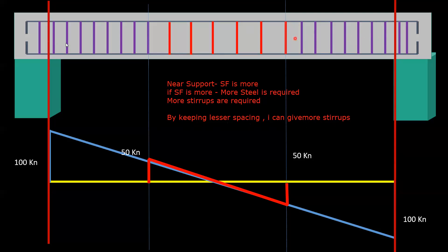That is why practically, when we were understanding center-to-center distance for stirrups near the support, we were keeping 100 mm, 100 mm, 100, 100 and so on. But if you come to the middle portion, where shear force reduces from 50 to 40, 30, 20 and 0, shear force is less. If shear force is less, less steel is required, less stirrup is required. So you can provide less stirrups by giving more spacing — that is why at the center we increase the spacing to, say, 150 mm.